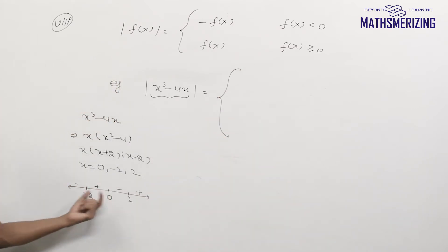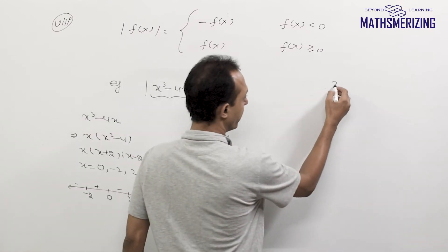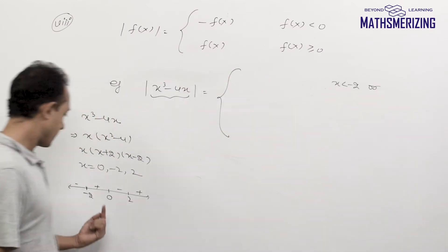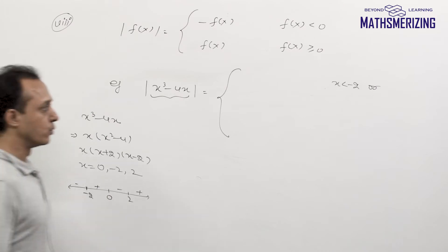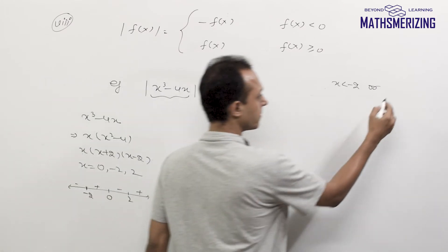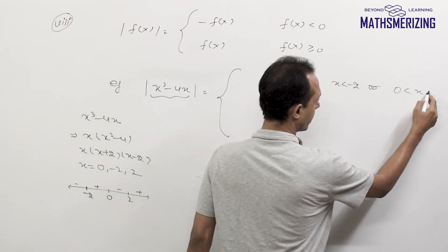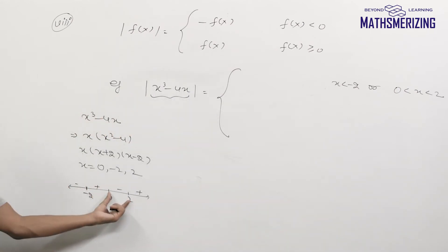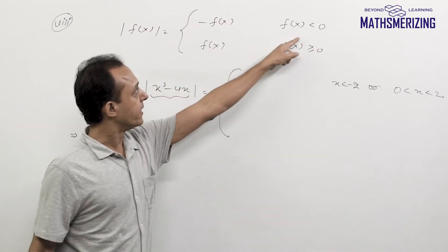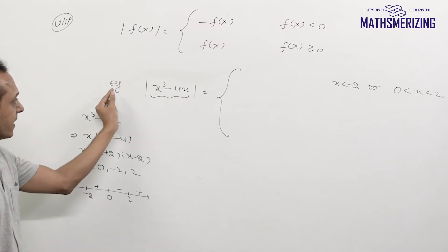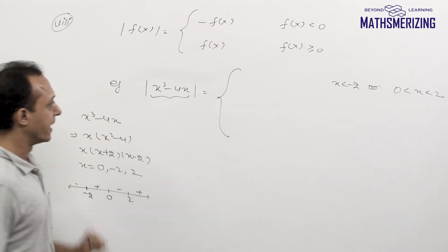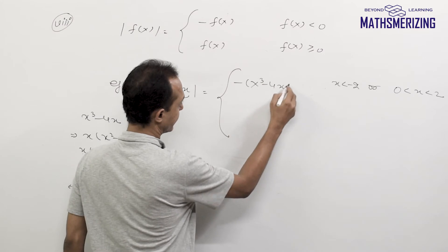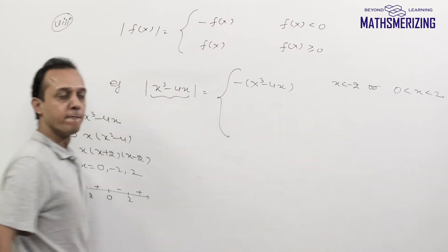The definition is: when f(x) is negative — which is when x is less than minus 2, or when x lies between 0 and 2 — in this case the expression is negative. So when f(x) is less than 0, it is minus f(x). I will simply take a minus sign, giving minus x cubed minus 4x.